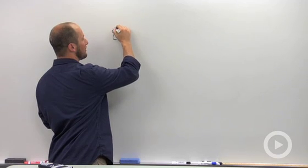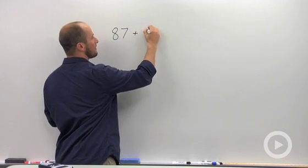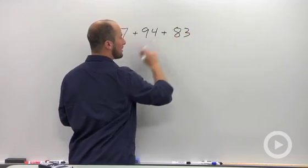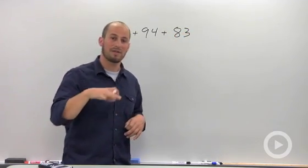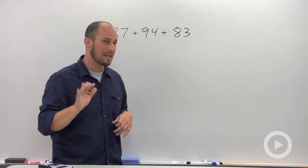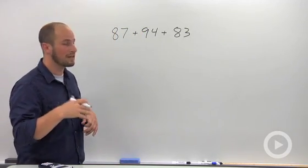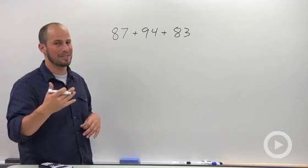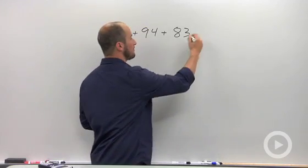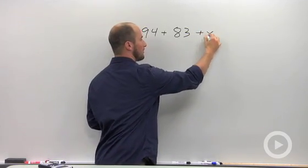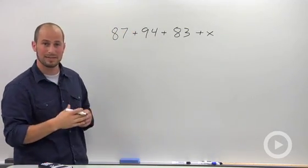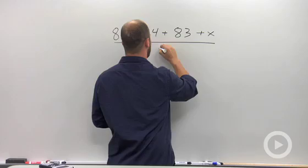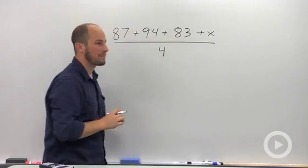have our scores of 87, 94, and 83. If we divide this by three, we would get the average of our first three tests. That's not what we're talking about—we're talking about the average of our first four. We don't know what our fourth score is. Anytime we don't know what something is, call it X. So our fourth test is a score of X. To find the average of these four, we divide by four, and we want